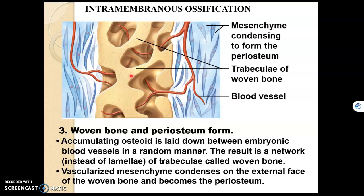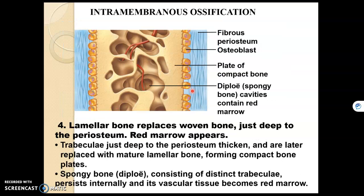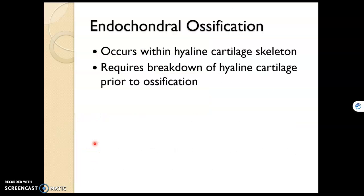Blood vessels start to infiltrate, and you can see spongy bone starting to form. The periosteum begins to form with more mesenchyme cells. Then bone starts to layer — we start to get lamellar bone. And that is intramembranous ossification.